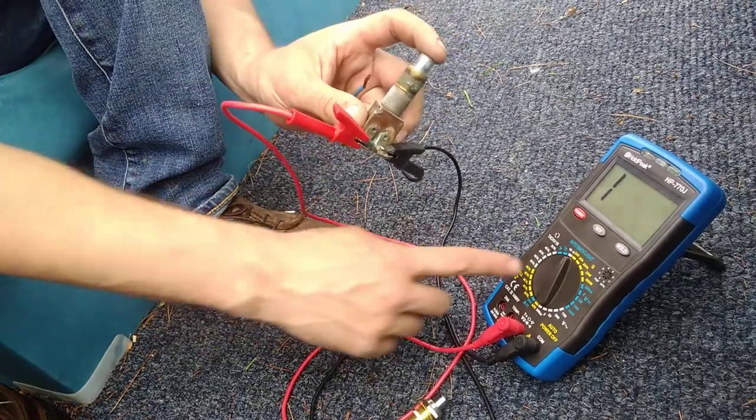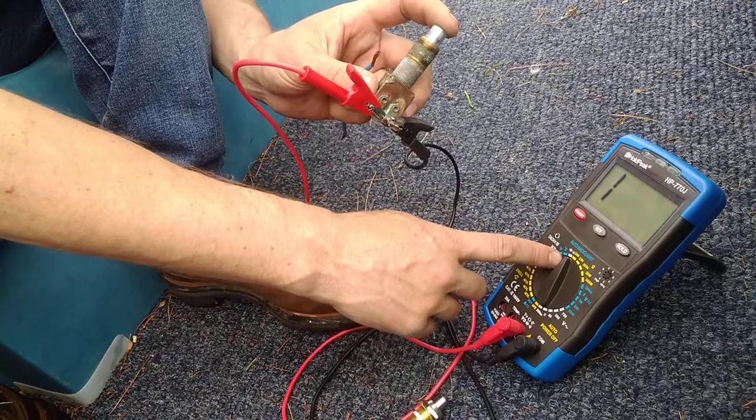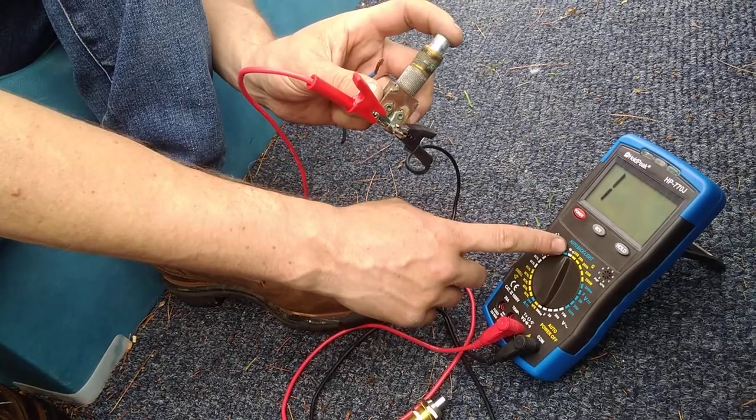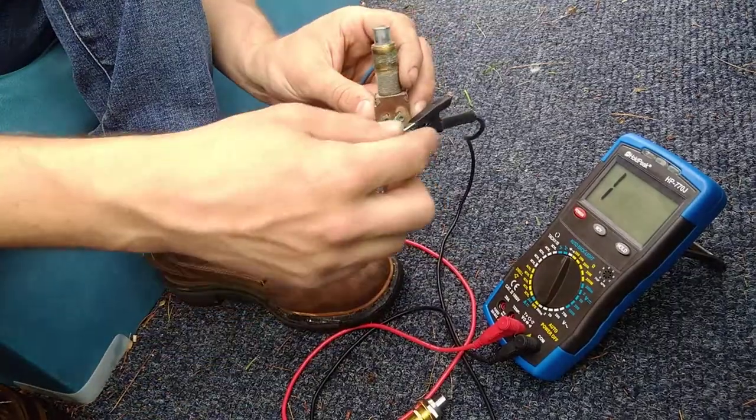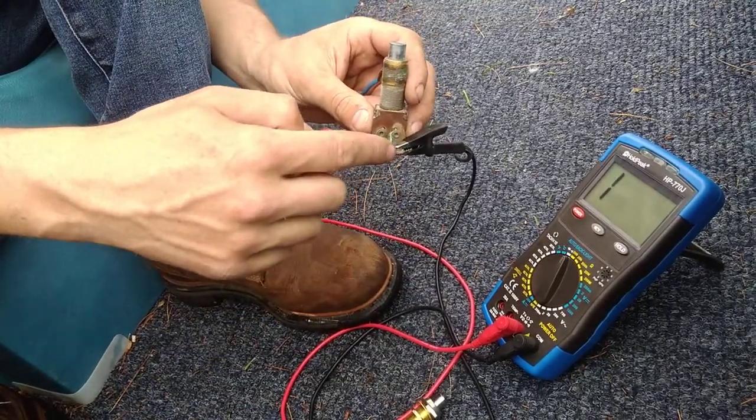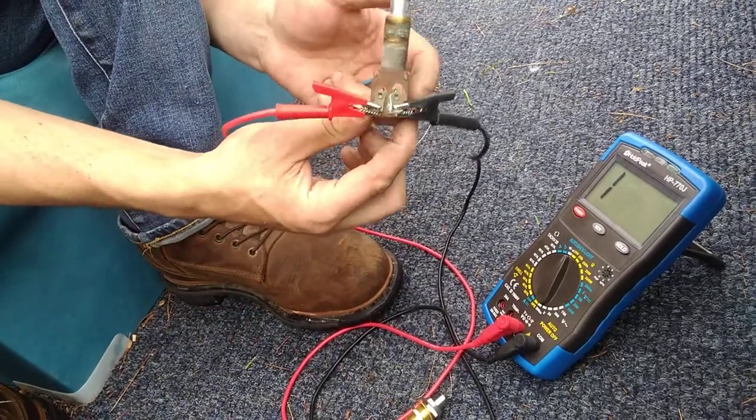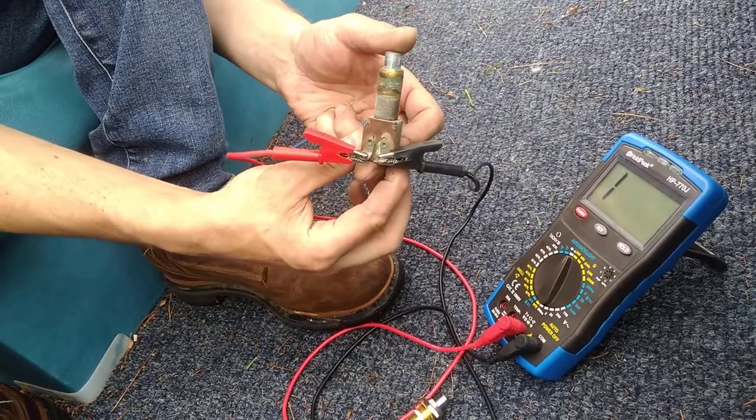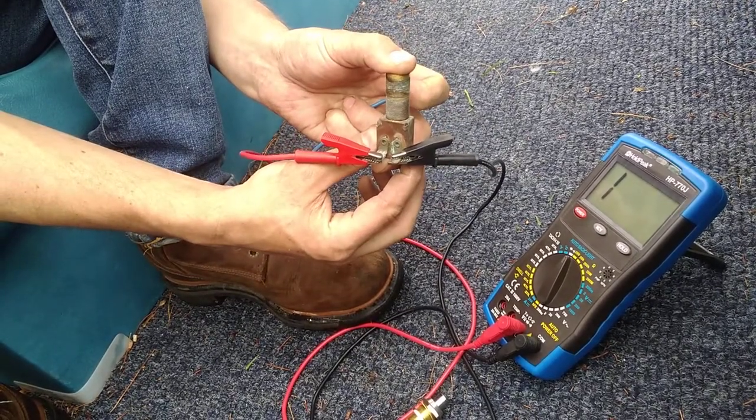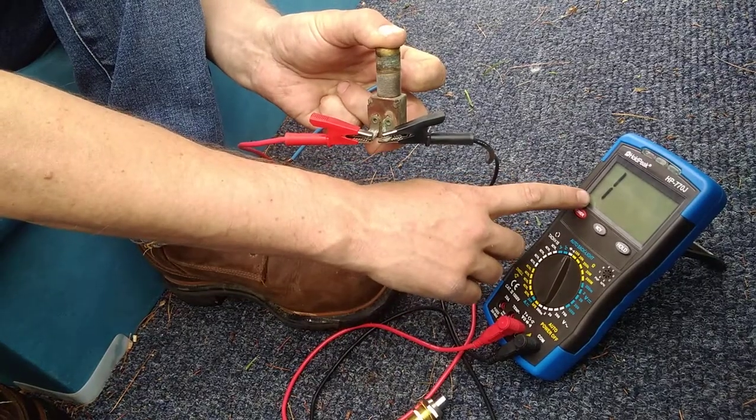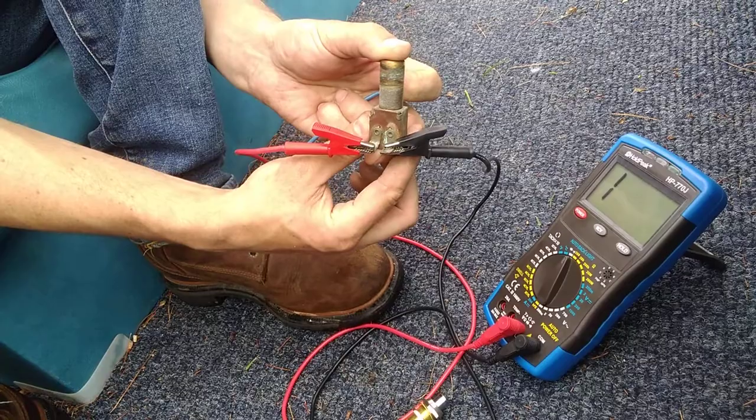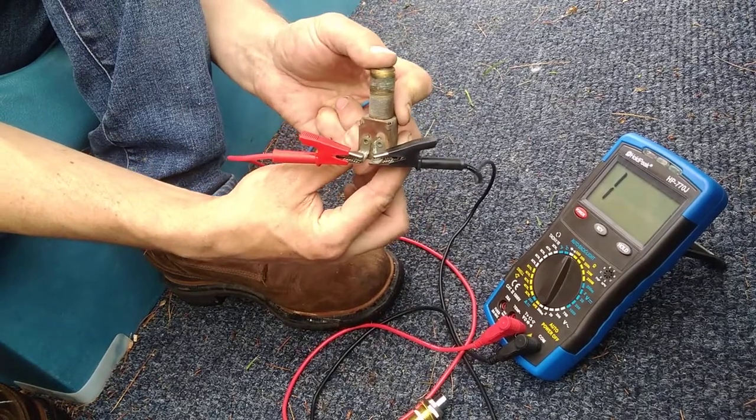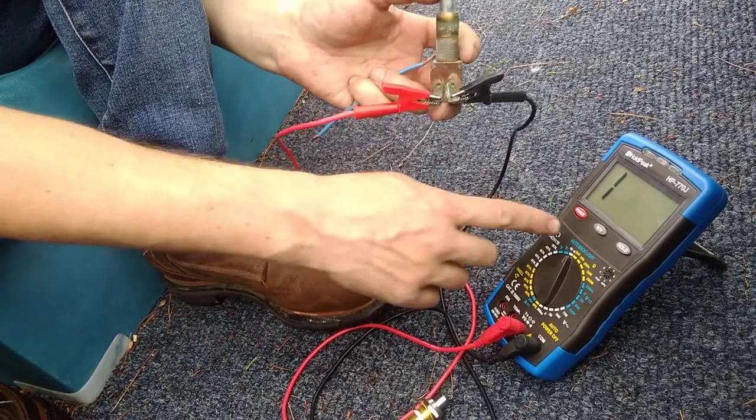I have my multimeter set to continuity, so it'll make a noise and give us the resistance reading when it measures continuity between these two terminals. When I press the switch, nothing happens. I still have open circuit - that's what the one means. I know that this switch is bad because I should hear this beep.